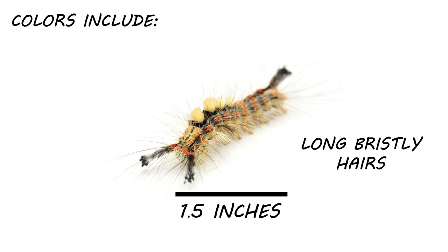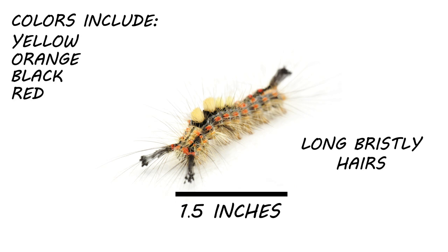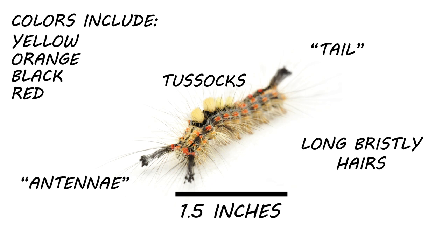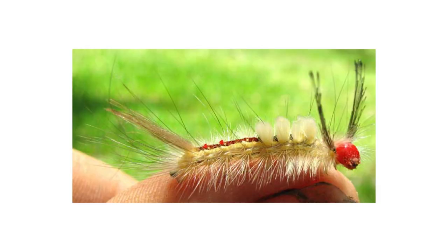Tussock moth caterpillars are covered in bristly hairs, giving them their unique look. Color patterns vary depending on the exact species, but colors generally include yellow, orange, black, and red. Among prominent tussock moth species in the U.S., most feature two clumps of hair that jut out from the head end looking like antennae, one clump of hair jutting from the rear looking like a tail, and four dense tufts or tussocks of fur along the caterpillar's back.